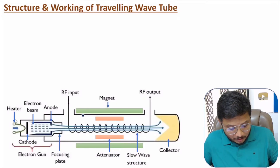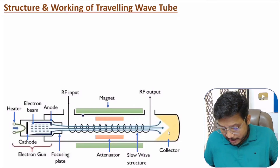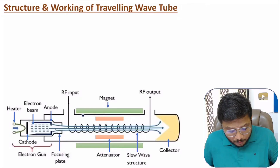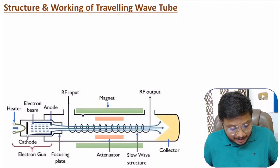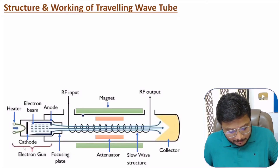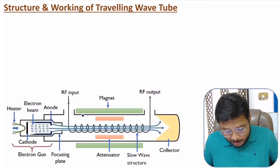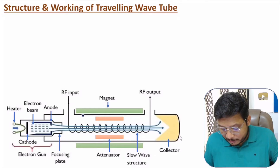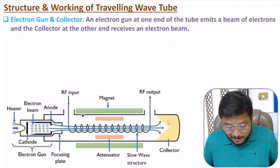In the structure, the electron gun radiates an electron beam moving towards the collector. The electron gun is connected with the negative terminal of the DC supply, and the collector is connected with the positive terminal. Because of this, electrons form at the gun and the electron beam is radiated and attracted toward the collector.